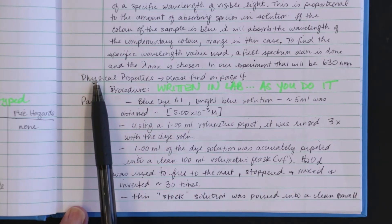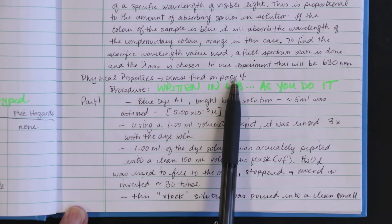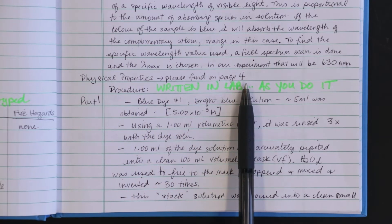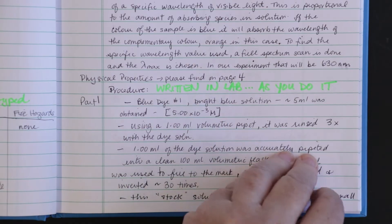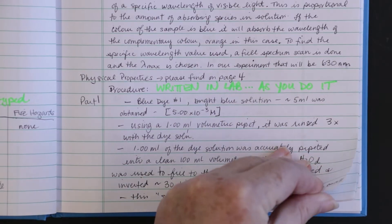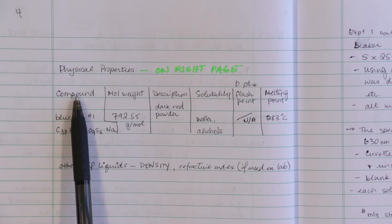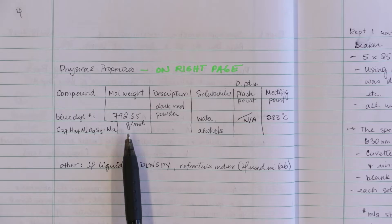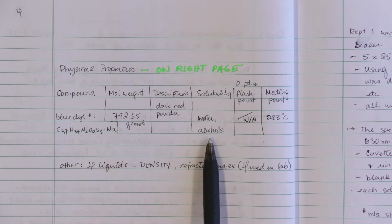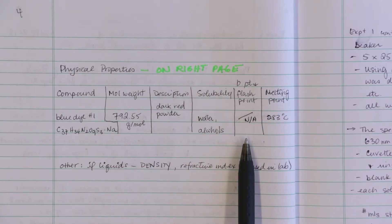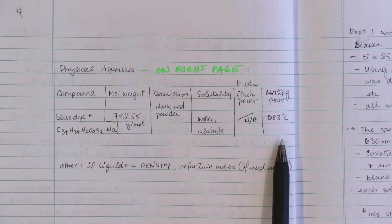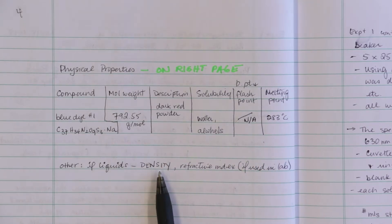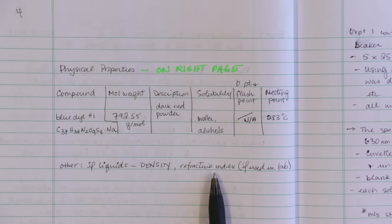It is important to include a physical properties table before you come to the lab. I forgot to do it when I prepared my notebook for this example and have stated where I have written it. It should be originally on the right-hand page. It lists the compound name and the formula is ideal, the molecular weight, the description, the solubility, boiling point, flash point, and melting point. If I am using pure liquids I will need density and the refractive index if I am using that in a lab that day.